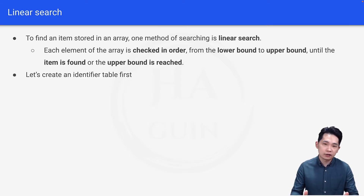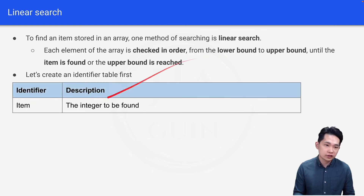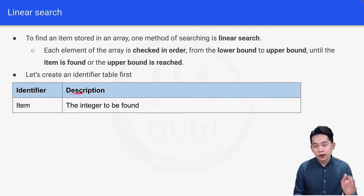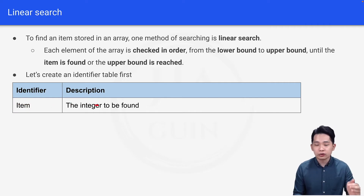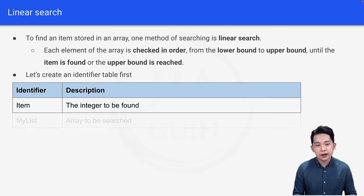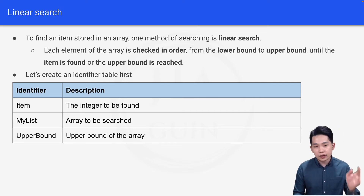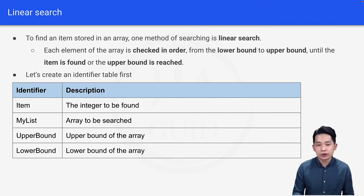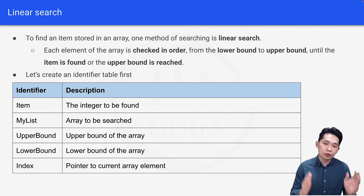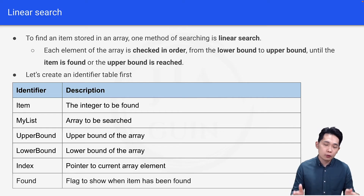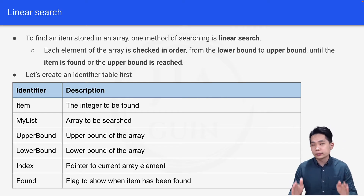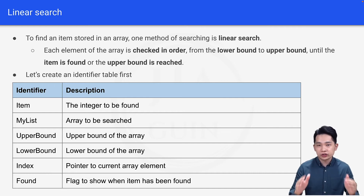Let's look at the identifier table for linear search. We have an identifier column and a description column. The first item is 'item', which is the integer to be found — for example, if I'm looking for the number 4, item equals 4. Next is 'my list', the array containing numbers to search. Then 'upper bound' and 'lower bound', 'index' as the pointer to the current array element, and 'found' as a flag to show whether an item has been found.